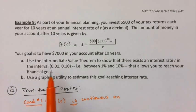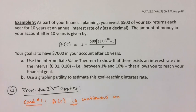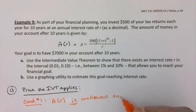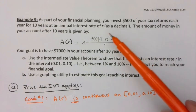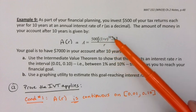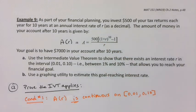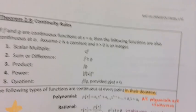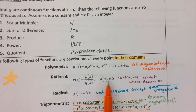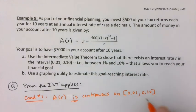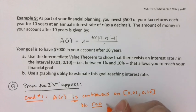It's continuous on that closed interval from 0.01 to 0.10, and here's why. Looking at the numerator, (1 + R)^10 is a polynomial, divided by another polynomial, R. So the only value that won't exist is the value that makes the denominator 0, which is R = 0. So it's continuous on this interval because R = 0 is not contained within it.